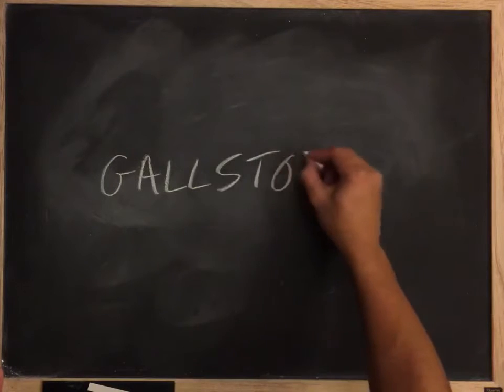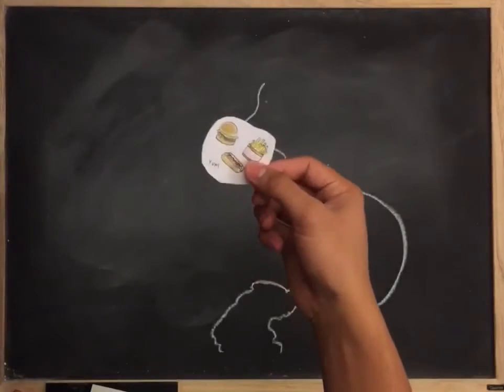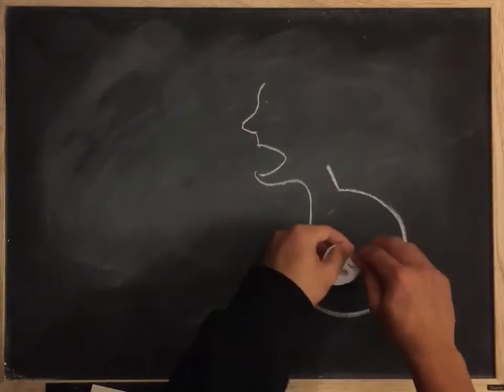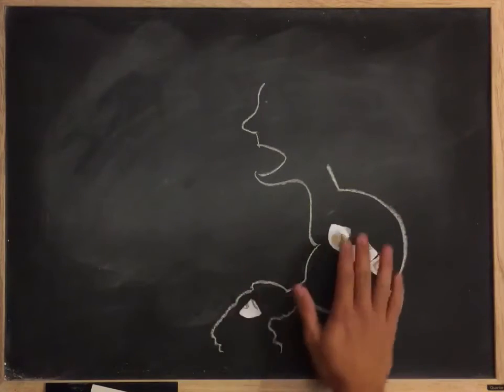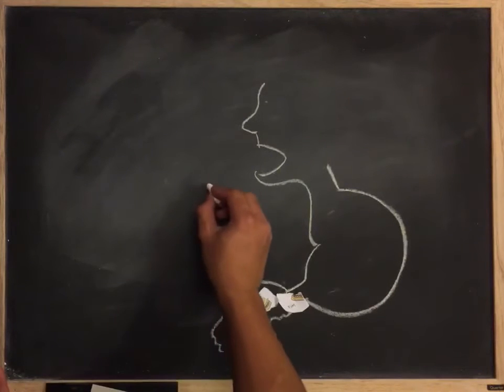So in today's video we're going to be talking about how gallstones are formed and the chemical processes behind the formation. Whenever we eat fatty foods such as burgers or fries or hot dogs, our body has to break them down and absorb them.